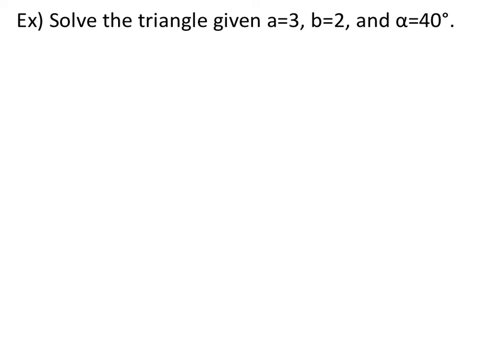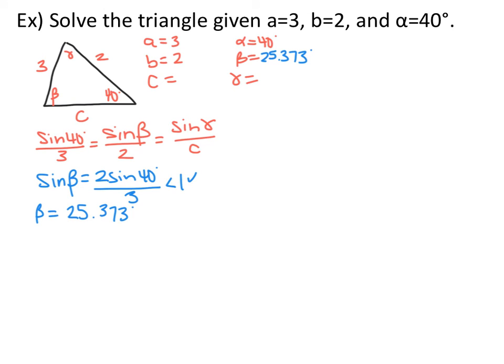Now try this one: a triangle with side a of 3, side b of 2, and angle alpha of 40 degrees. Draw your triangle, set up your law of sines, and don't forget to test for 0, 1, or 2 triangles. The red shows the given information. Solving for beta first, the sine of beta is less than 1, so we'll have at least one triangle, and beta equals 25.373 degrees.